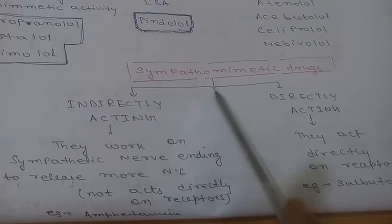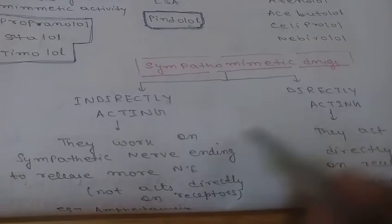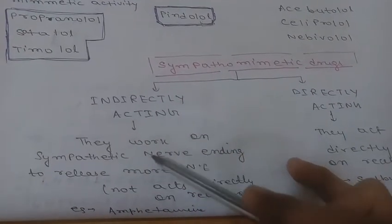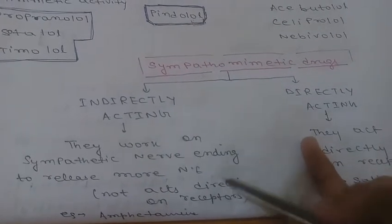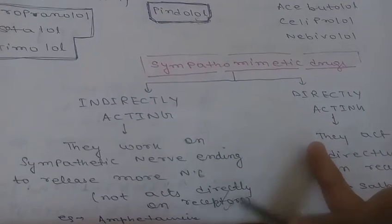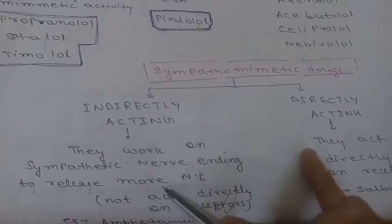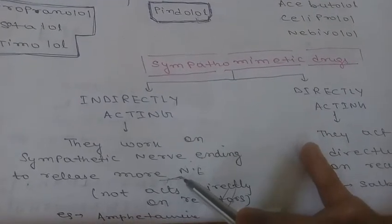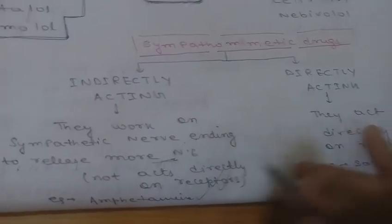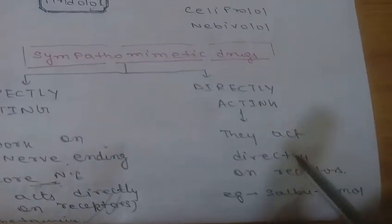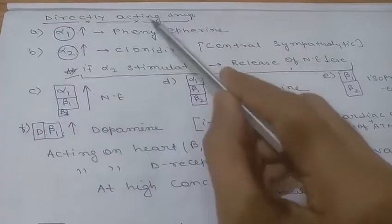Sympathomimetic drugs can be divided into two types: indirectly acting and directly acting. Indirectly acting drugs work on the sympathetic nerve ending to release more norepinephrine — they don't bind directly to receptors. An example is amphetamines. Directly acting drugs act directly on receptors; an example is salbutamol.